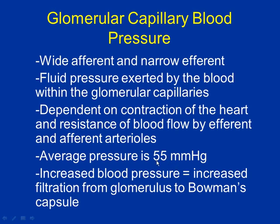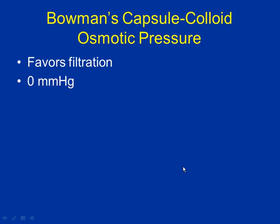Increased blood pressure increases the filtration rate in Bowman's capsule — it's hand-in-hand. The Bowman's capsule colloid osmotic pressure should be zero normally, since there should be no proteins there. Blood colloid osmotic pressure is proteins in the blood holding water in — at 30 mmHg, opposing filtration, so a positive value. Capillary blood pressure pushes out of blood — a negative value.